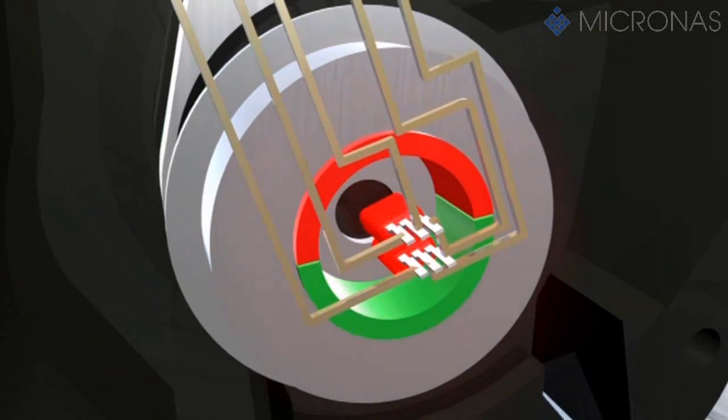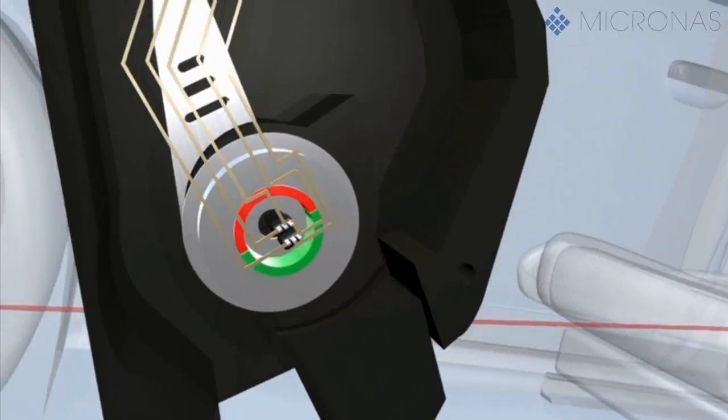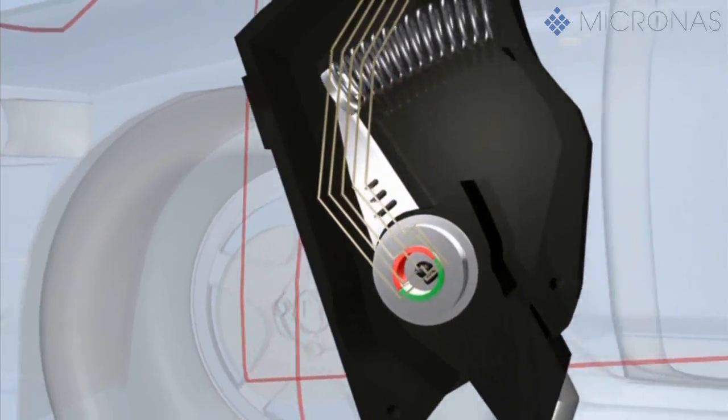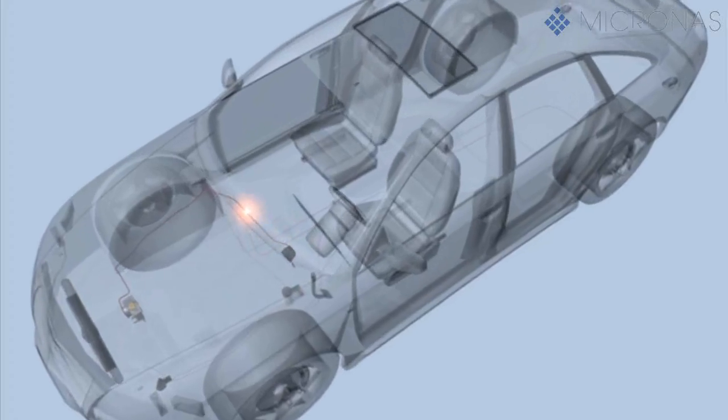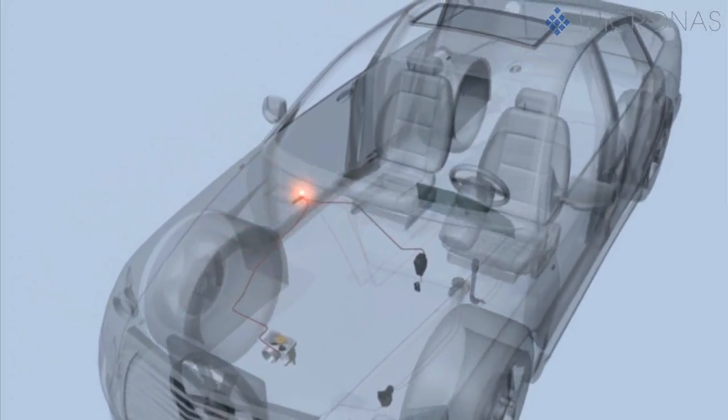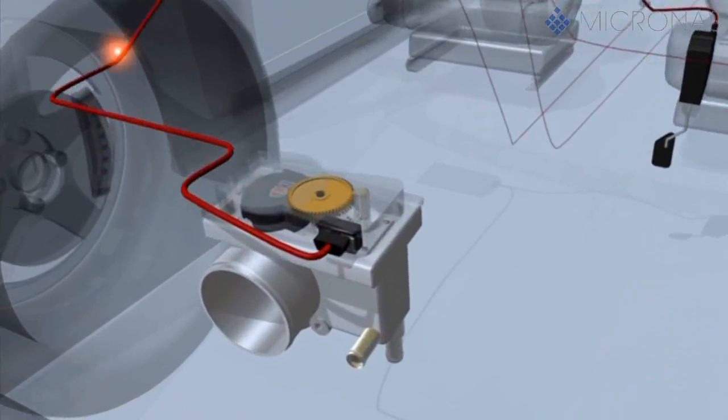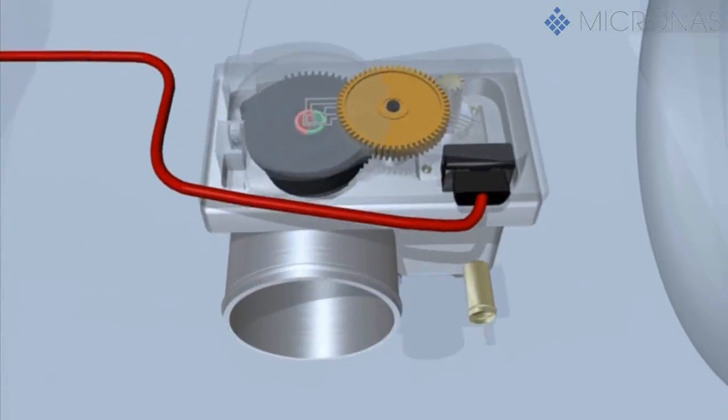This then uses the signal to specify an angle for the throttle motor. The throttle motor sets the specified angle for the throttle.